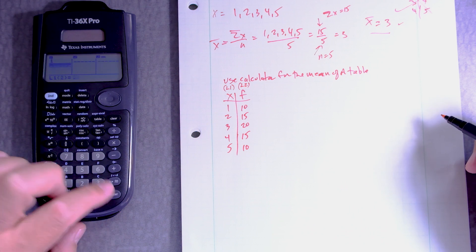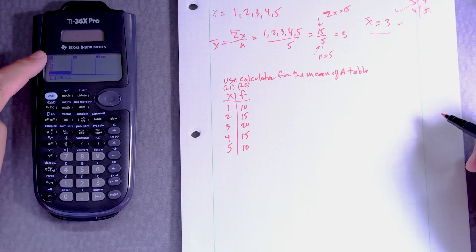So 1, 2, 3, 4, 5, right? We enter the data. Every number I press, I enter.